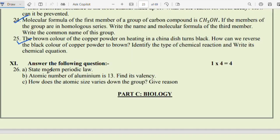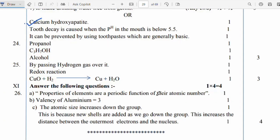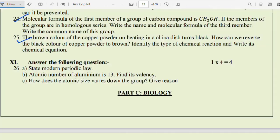Question 7: Answer the following questions. State modern periodic law. Atomic number of aluminium is 13, find its valency. How does the atomic size vary down the group? Give reason. Very important question. Properties of elements are periodic function of their atomic number. Valency of aluminium is 13. Give reason why atomic size increases down the group. Because shells are added as we go down the group. This increases the distance between the outermost electron and the nucleus. These questions come from chemistry.